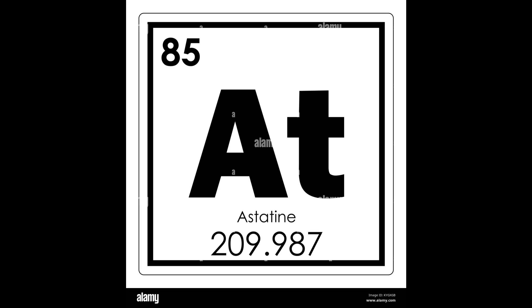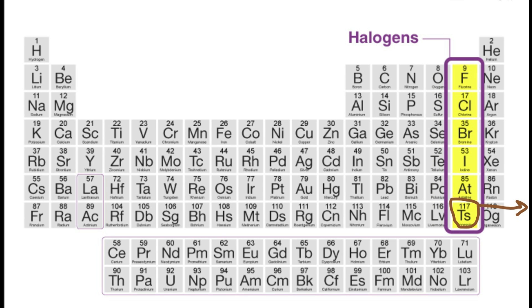Astatine, symbol At, is the rarest naturally occurring element. Tennessine, symbol Ts, is a synthetic and super heavy element.